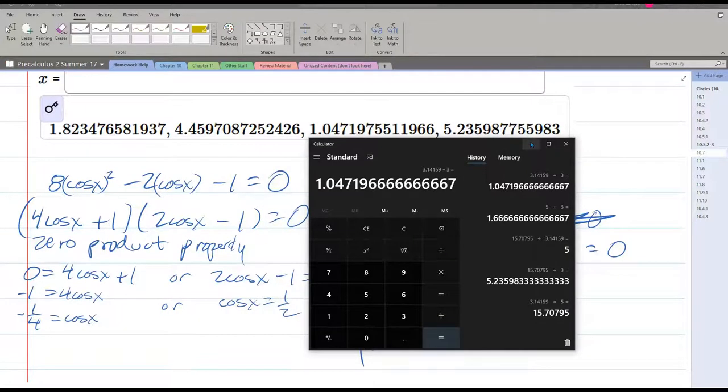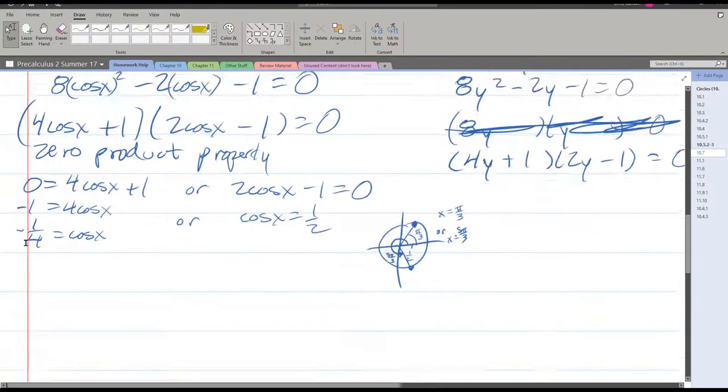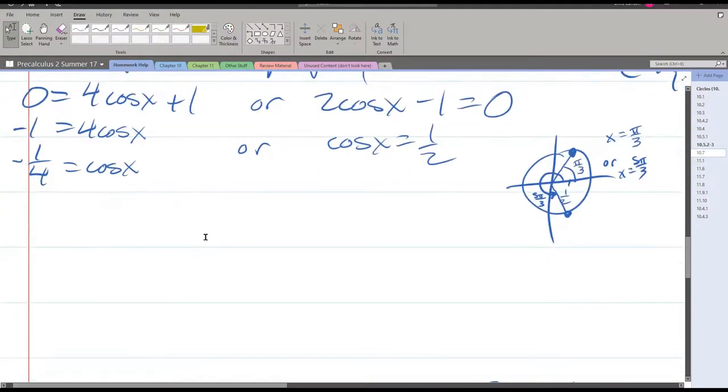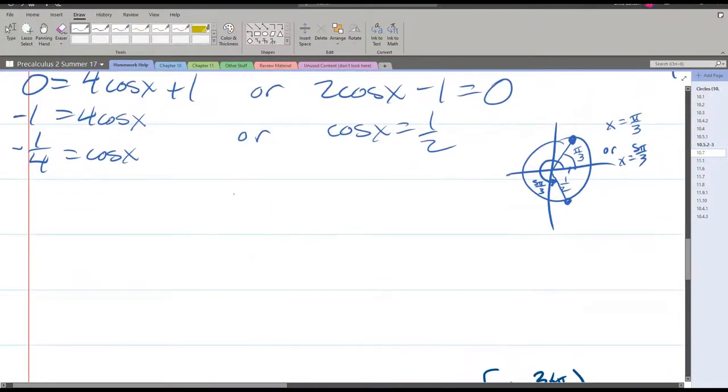We're going to get the other two, but they're not going to be nice multiples of π. And I know that because I can already tell right here we don't have a 1/4 on our unit circle normally. So there, of course, is an angle that gets to 1/4. 1/4 right there. There's actually two angles between 0 and π. Unfortunately, we can't get them directly.